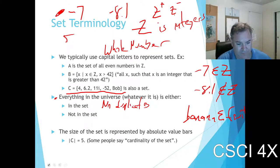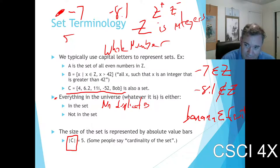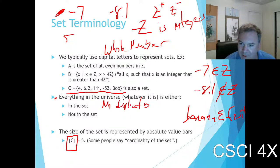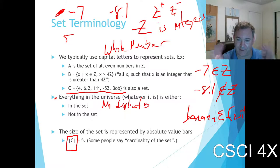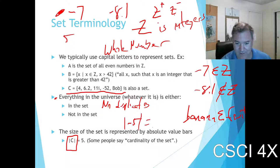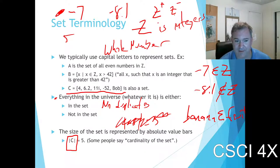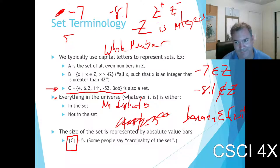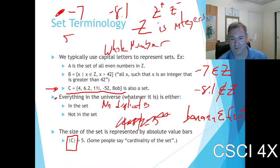How big is a set? How many different elements does it contain? We represent that with absolute value bars. If you put absolute value bars around a set, you're asking how many elements are in that set. If I asked how many elements are in set C — one, two, three, four, five — you just count them. That's the cardinality of the set.